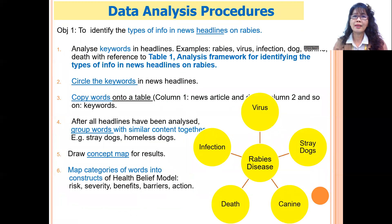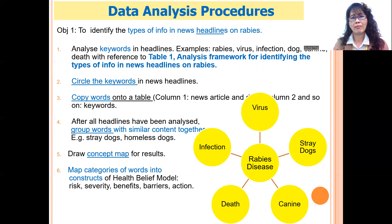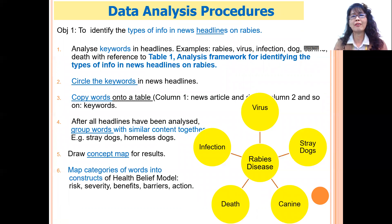For the data analysis procedures for objective one — on the types of information in the news headlines — I circled the words that are relevant to rabies. In the preliminary analysis, I found that the relevant words include virus, stray dogs, canine, death, and infection.